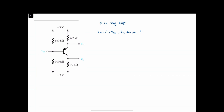The first thing we know is that we have a PNP transistor. This will be our emitter, this will be our collector, and this is our base. We also know that beta is very high. When beta goes to infinity, IB equals IC over beta, so I-base will be equal to zero.